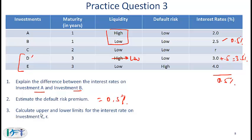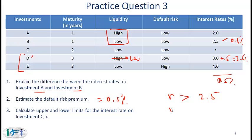Finally, estimate the upper and lower limits for the interest rate on investment C. Between B and C, the only difference is that C has a longer maturity, so the rate on C must be greater than B's rate of 2.5%. Comparing C to the low-liquidity version of D — which has a return of 3.5% and the same liquidity and default risk as C but a longer maturity — C's maturity is less, so R must be less than 3.5%. Therefore, the range for R is between 2.5% and 3.5%.